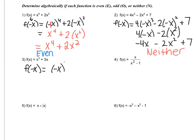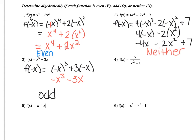Let's try example number three. We're going to plug in f of negative x: negative x to the third plus 3 times negative x. Negative x to the third is negative x to the third, and positive 3 times negative x is negative 3x. Comparing to the original: does positive x to the third turn into negative x to the third? Yes. Does positive 3x turn into negative 3x? Yes. All of the signs are opposite, so the function is odd.